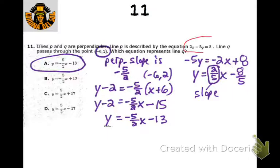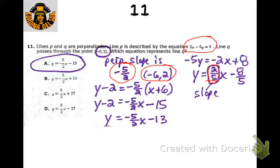Here we take this equation and put it into slope-intercept form. Once we do, we can tell that the slope is 2/5. So we flip it and change the sign — that's the slope of the perpendicular line. We use the point they gave us and point-slope form again. We get y minus 2 equals negative 5/2 times (x plus 6), because it's x minus negative 6. Then we distribute and get negative 5/2 x. Multiplying negative 5/2 times 6 gives negative 15. Adding 2 to both sides gives negative 13.